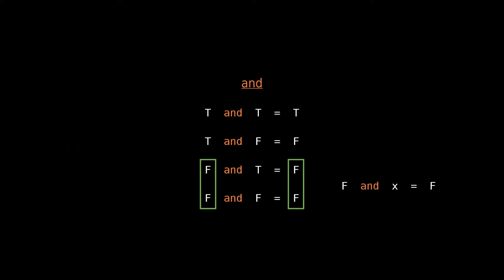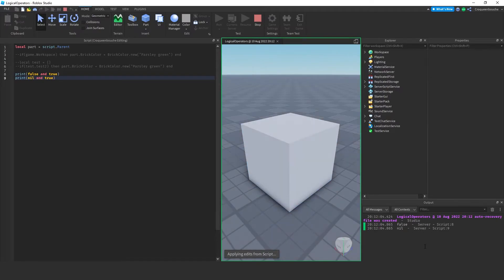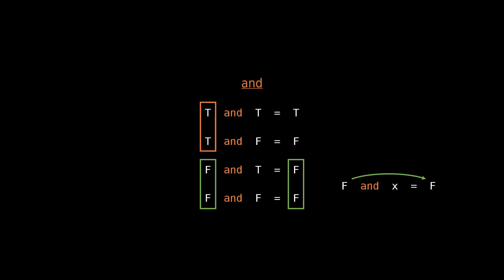We can express this as: false AND anything results in the false value itself. Both false and nil have a logical value of false in Lua, so the first operand can be either, and the result will be whatever that first operand is. If I run these print statements — false and true, nil and true — the output shows false and nil respectively. If we look at the case where the first operand is true, the output matches the second operand. So if the first operand of an AND expression is true, the result will be whatever the second operand is — we can express this as: true AND x results in x.